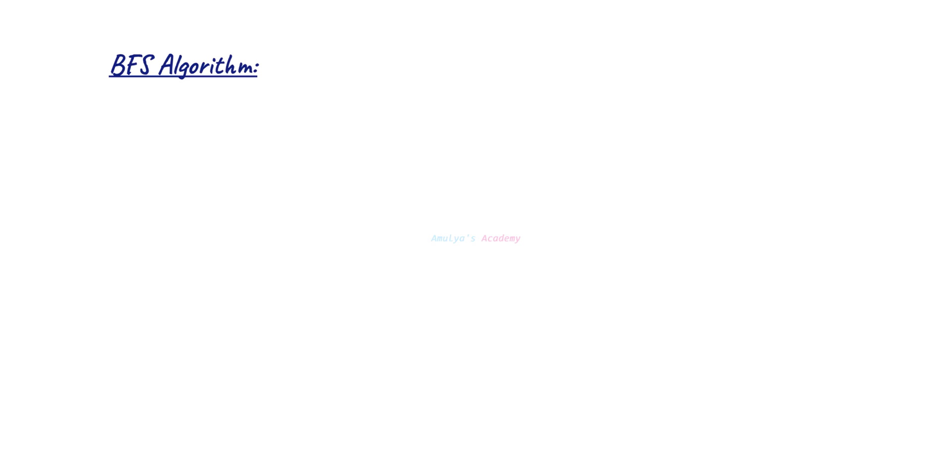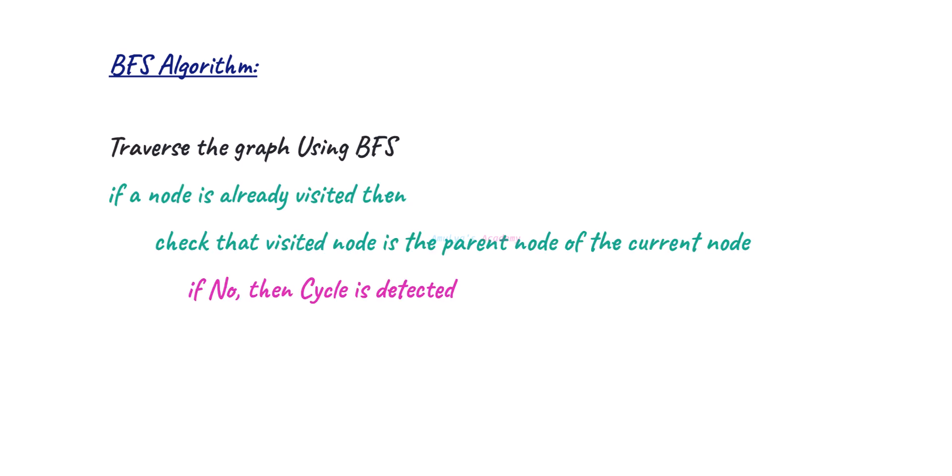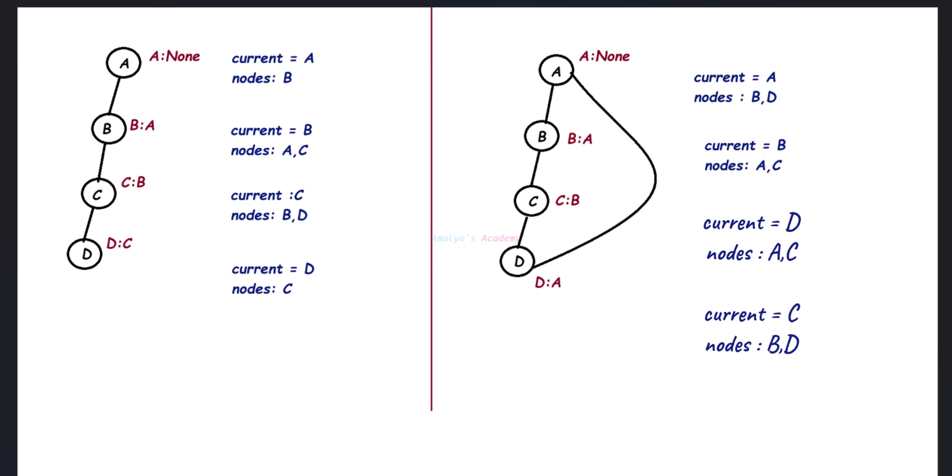In an undirected graph, a cycle is detected if you encounter a node that is already visited and it is not the immediate parent of the current node. To find this cycle, traverse the graph using BFS algorithm. While traversing, we need to check whether a node is visited or not. If it is already visited, then we need to check whether it is the parent of the current node. If it is not, then there is a cycle in that graph — so that is a cyclic graph.